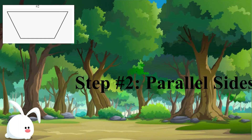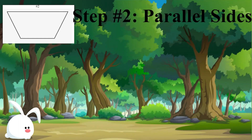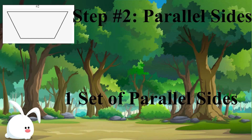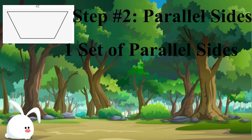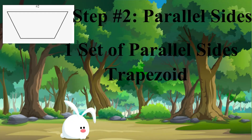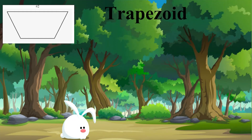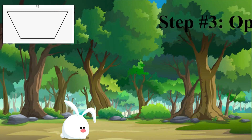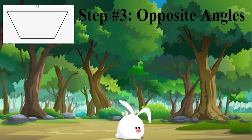Let's move on to step number two and look at the parallel sides of the figure. This figure doesn't have all sides parallel, but it has one set of parallel sides — that being the top and bottom. Those sides are parallel because they're never going to touch each other. Using that, we can put it in the trapezoid category, which takes it out of the kite category and the parallelogram category, based off of the one set of parallel sides.